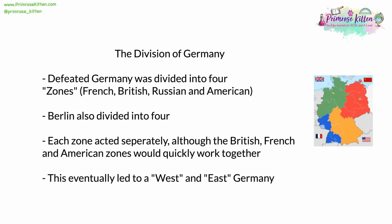Each zone in most respects acted separately, although shortly after the war the British, French, and American zones began to quickly work together and coalesce. Eventually this would lead to two Germanys: West Germany, comprising the former British, American, and French zones, and East Germany, comprising the Soviet zone.